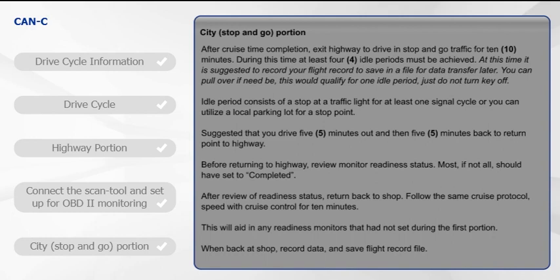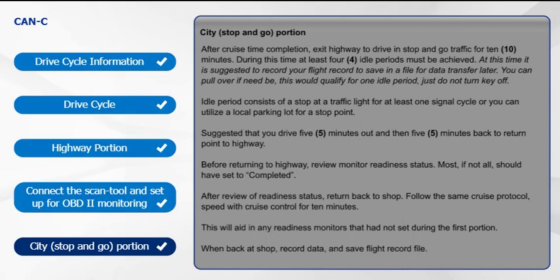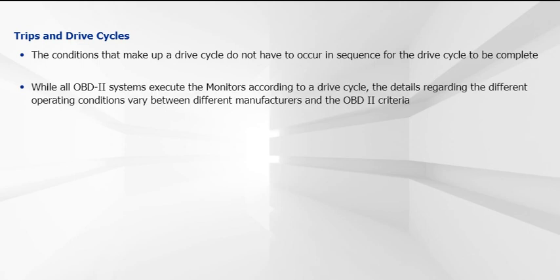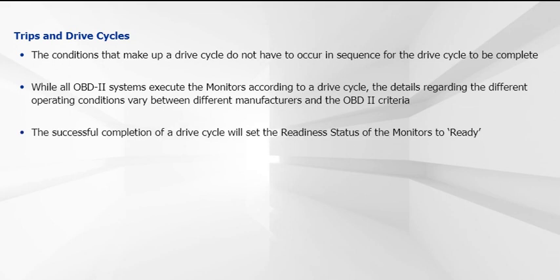This will aid in any readiness monitors that had not been set during the first portion. Once back at the shop, record data and save the flight record file for future reference. Be aware that the various operating conditions that make up a drive cycle do not have to occur in sequence for the drive cycle to be complete. While all OBD2 systems execute the monitors according to a drive cycle, the details regarding the different operating conditions vary between different manufacturers and the OBD2 criteria. The driving cycle consists of engine start-up and engine shutoff. The scan tool will display the word 'complete' when the monitor has run, while others use words such as 'ready' or 'done.'